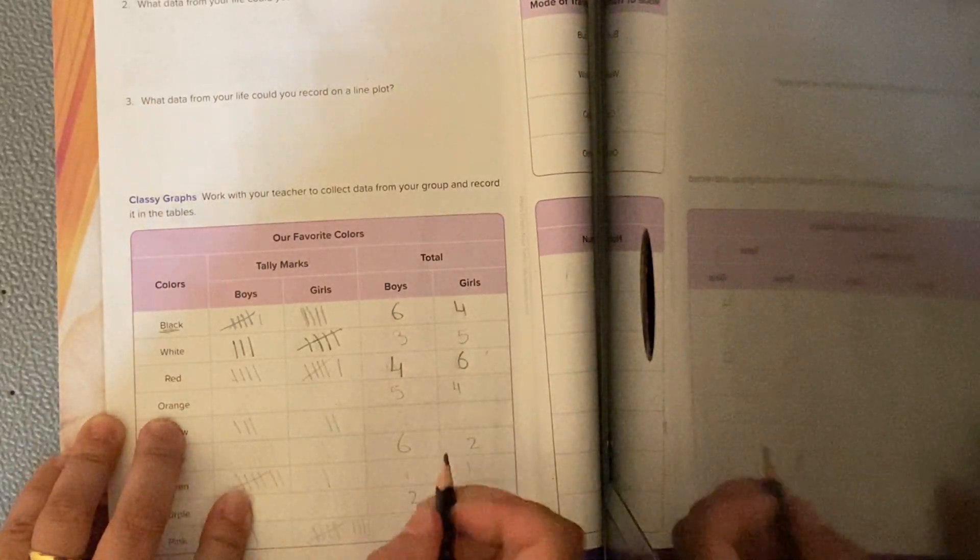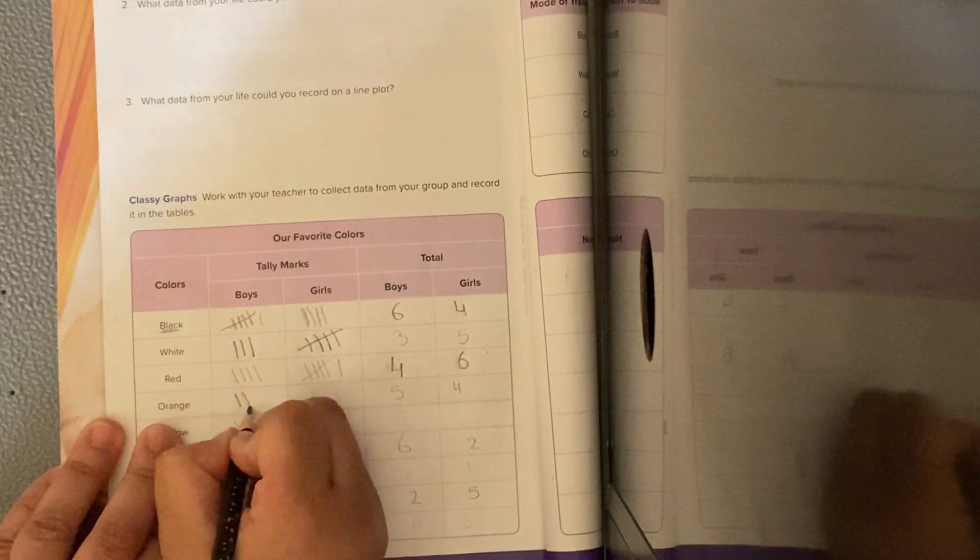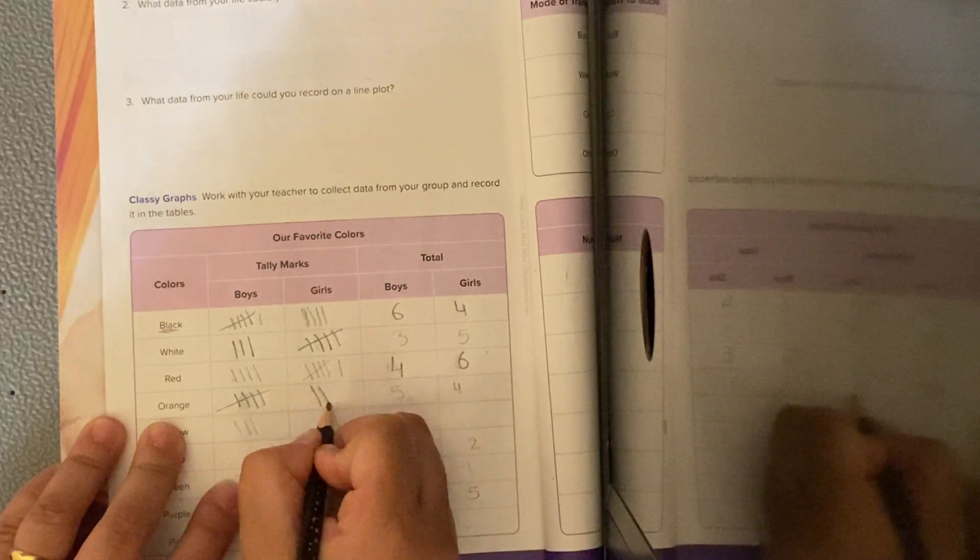The orange, how many for the boys like orange? 5. So 1, 2, 3, 4, 5. How many for the girls? 4. 1, 2, 3, 4.